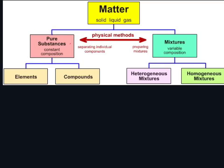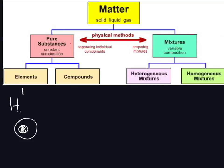Pure substances can be further classified into elements and compounds. An element is a substance that has one type of atom — it can't be broken down any further. For example, hydrogen: hydrogen contains one atom, one neutron, one proton, one electron. You can't break that down.